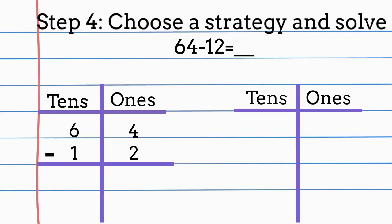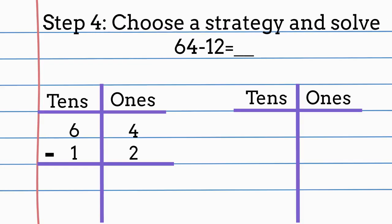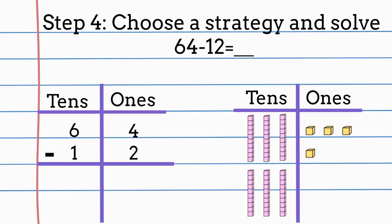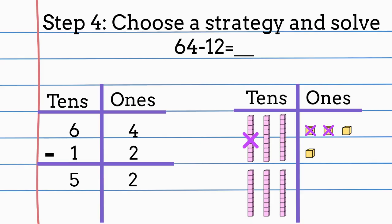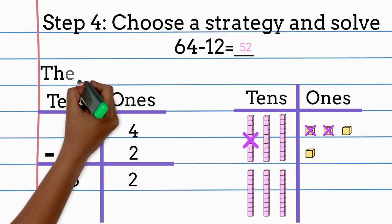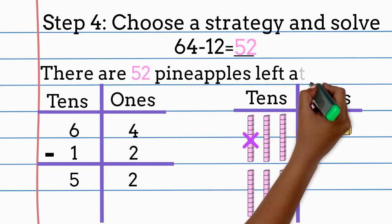Let's go solve. What number are we going to model? That's right — 64, because that is the amount of pineapples that are at the store. And we need to take away 12 rotten pineapples. Count as I subtract the ones place. Now count as I subtract the tens place. How many pineapples are left at the store? Great job! There are 52 pineapples left at the store.